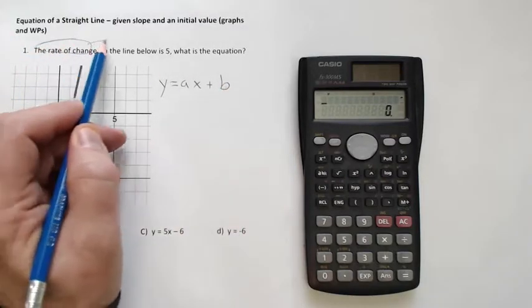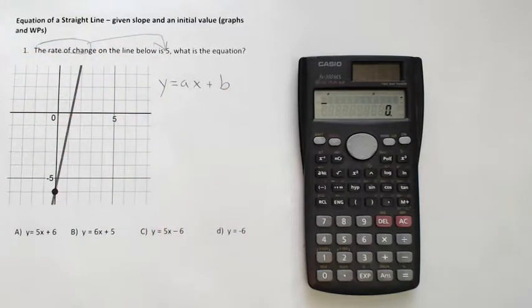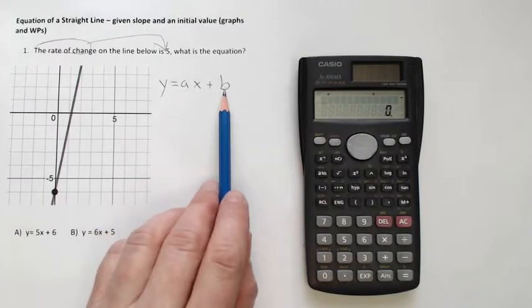Now, since they told me the rate of change below is 5, I already know the slope of this line is 5. So I know my a. All that's left is my b.